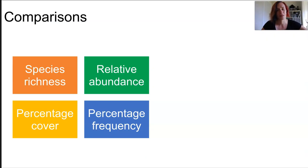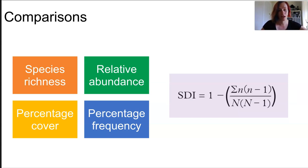To compare ecosystems we need to collect data through sampling. We've mentioned these types of data: species richness, relative abundance, percentage cover, percentage frequency, and measuring our biodiversity using SDI.